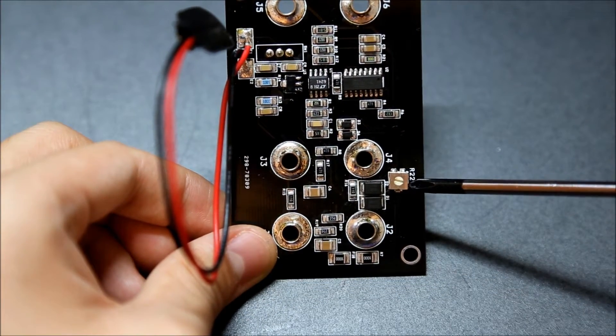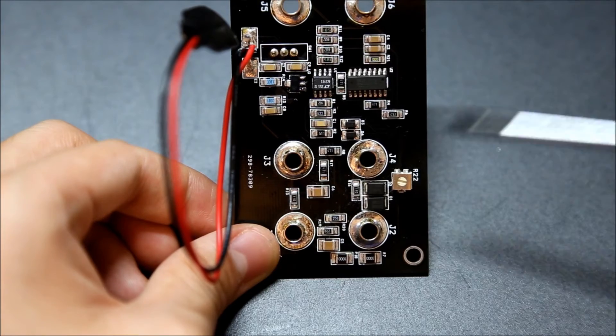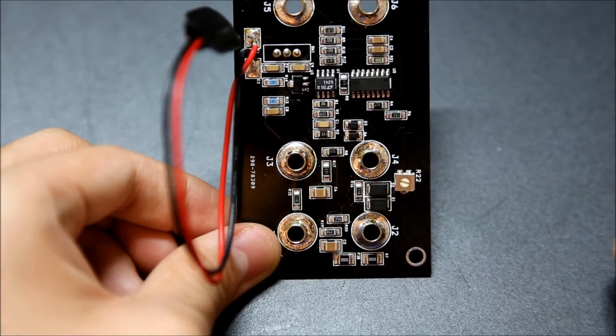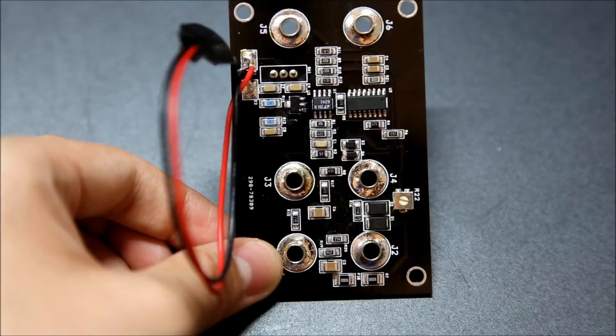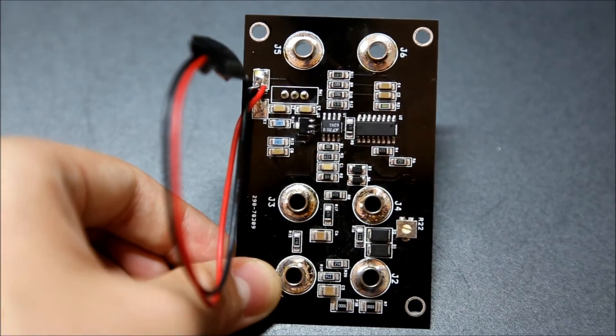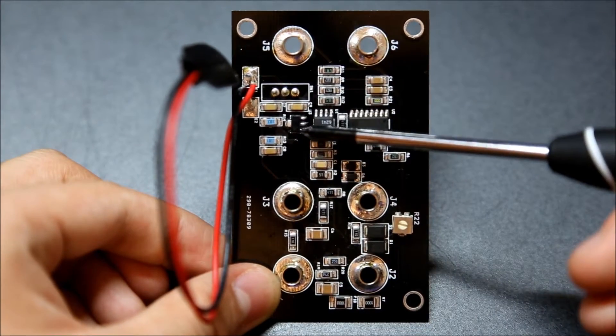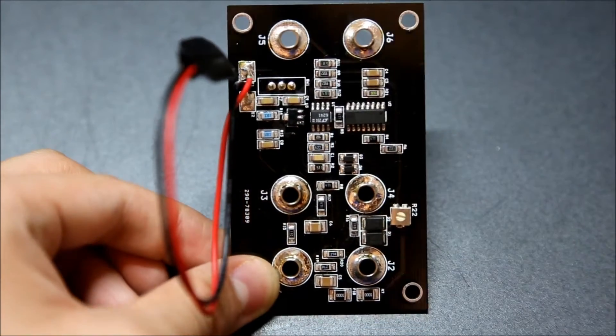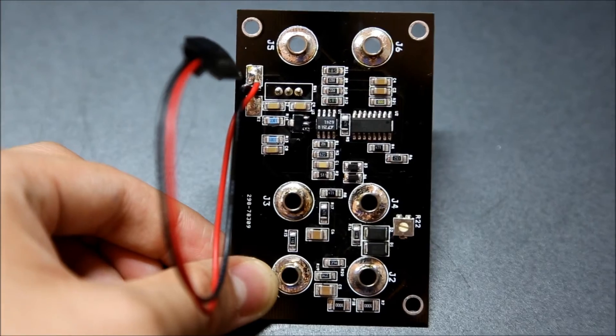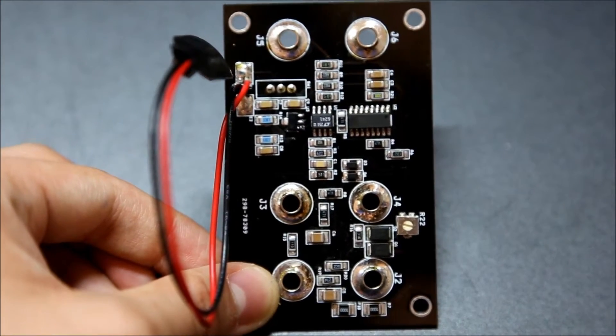I remember when I first got this, it wouldn't measure anything. I was really quite disappointed. Funny thing was it would output no voltage, and then I later found out it was just a dry joint on a 7805 regulator here. So I am going to try and zoom in a bit, so bear with me here for a second.